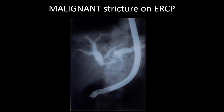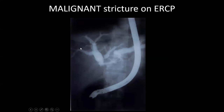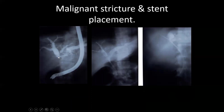Here is another example of ERCP where we can see dilated proximal CBD and there is an abrupt cutoff. This abrupt cutoff is because of a mass lesion. So we will take a biopsy from this area and remove the obstruction by passing a stent. Here you can see the obstructed portion — contrast cannot be seen in the distal portion — while after passing the stent there is free flow of contrast through this region.